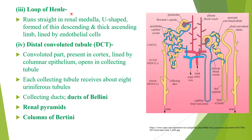Next part of the nephron is the loop of Henle, which runs straight in the renal medulla. It is U-shaped, formed of thin descending and thick ascending limbs, and lined by endothelial cells. Next is the distal convoluted tubule — convoluted, present in the cortex, lined by columnar epithelium, and opens into the collecting tubule. In this diagram you can see Bowman's capsule with the glomerulus capillary network, then the proximal convoluted tubule, the U-shaped loop of Henle, and then the distal convoluted tubule opening into the collecting tubule.